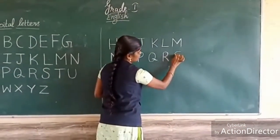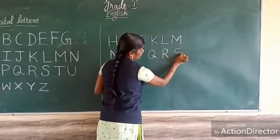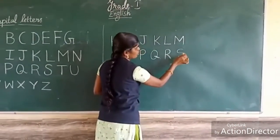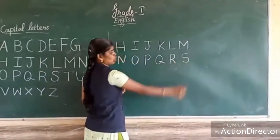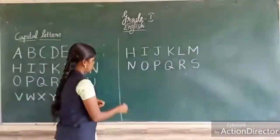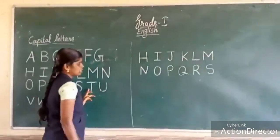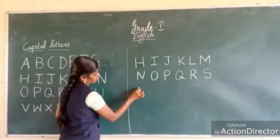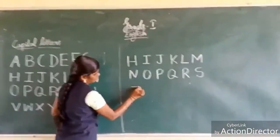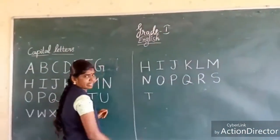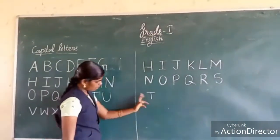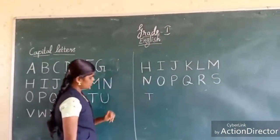Next, R. Curve up, up on curve, down on curve — this is R. Next, T. One sleeping line at the top and one standing line going down. This is T.